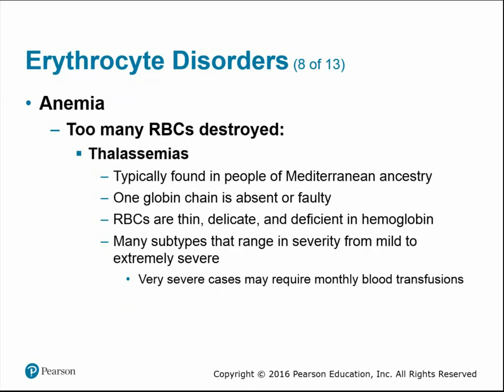Thalassemia is a genetic hemoglobin/red blood cell disorder typically found in people of Mediterranean ancestry. One of the globin chains is either absent or faulty and deformed, resulting in red blood cells that are thinner, more delicate, and deficient in hemoglobin. Different subtypes range in severity; in the most severe cases, the person may require monthly blood transfusions.